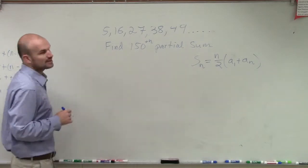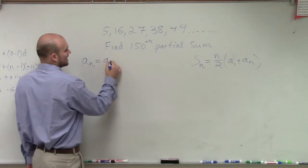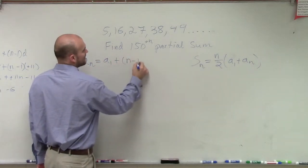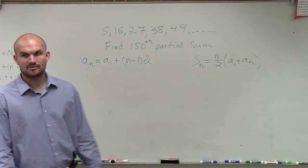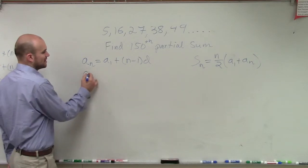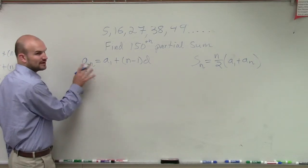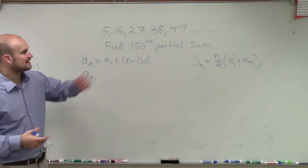So, to calculate what the 150th term is, we can go back to our formula, which is that a sub n equals a sub 1 plus n minus 1 times d. All right, I'm going to spoil the formula. So, we don't know what a sub n is. Actually, we're going to try to figure out what a sub n, but we'll try to figure out. We just want to find the rule right now. Then we'll find what the 150th term is.